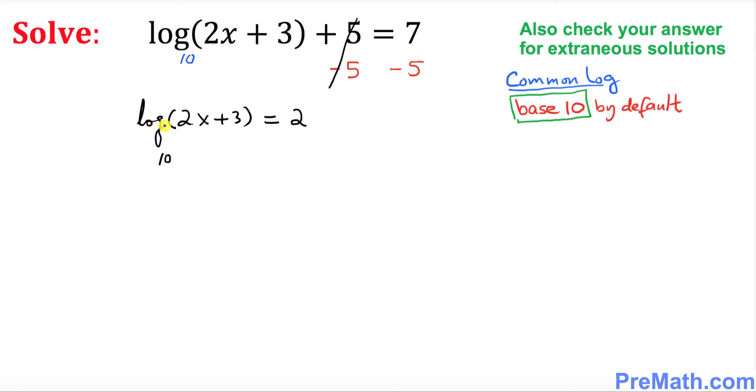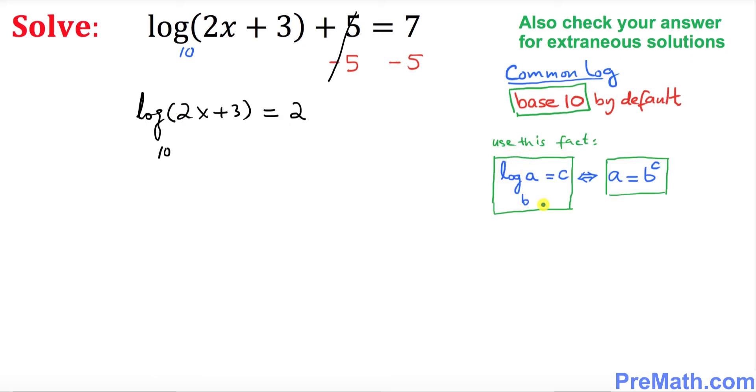The next step is to make life a little bit easier. In order to do that, I want to convert this logarithmic equation into an exponential equation. We will be using this fact to convert from logarithmic notation to exponential notation. In this case, base 10 is base B, this is A, and the right hand side is C.